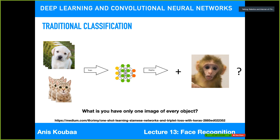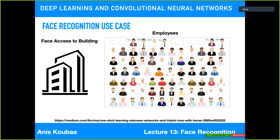This is why traditional classification approaches are limited in such scenarios. First, the number of objects can change, meaning we don't want to change the output layer. Second, we don't want to collect a large number of images for new objects.